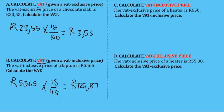In D, we are calculating the VAT exclusive price, which means we are removing VAT from the price. Don't confuse calculating VAT with including or excluding VAT from a price. I'm going to try to simplify this because there have been a lot of questions around this in the finance video.